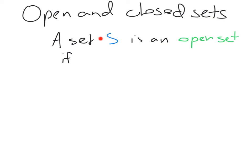So a set S, and our set is living within some space, so maybe our set is a subset of the real line, or our subset is a subset of the plane, or our subset is a volume region that's a subset of R3. A set S is an open set if,